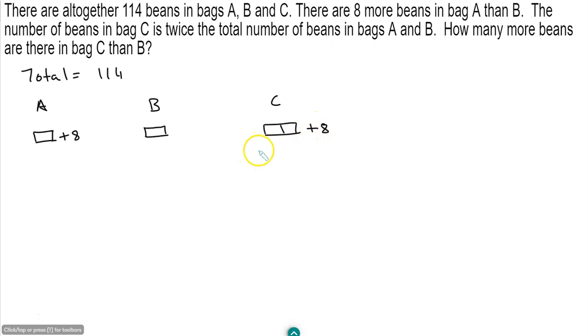And because it is twice, I need to add it again. Let's say 2 units plus 8. That gives me a total of 4 units plus 16.